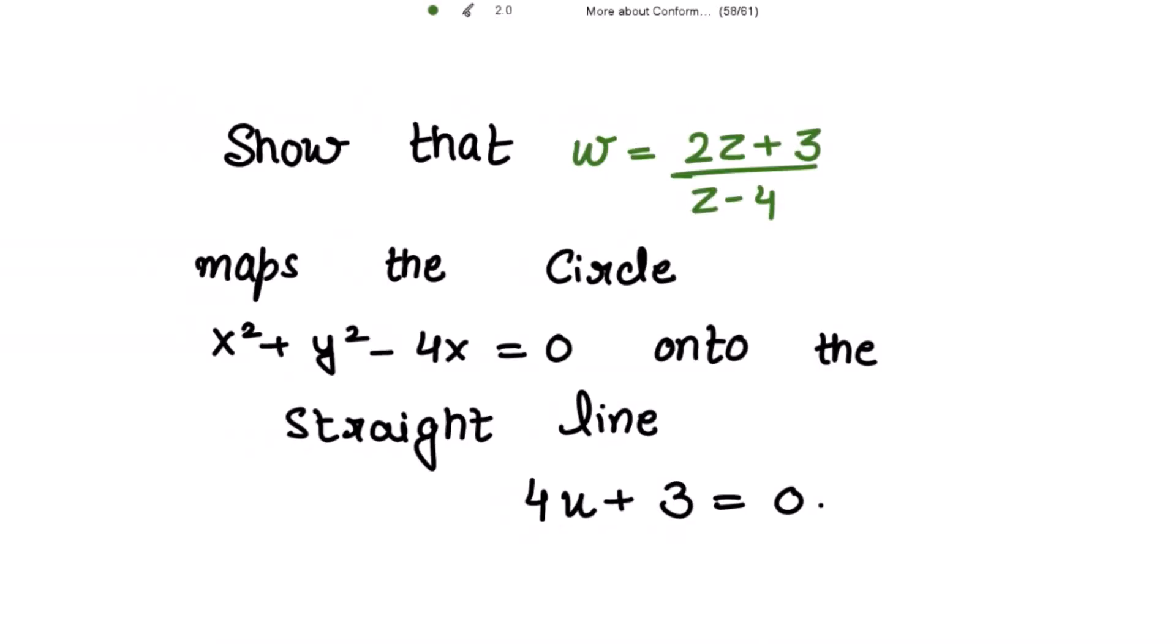Show that the transformation w equals 2z plus 3 over z minus 4 maps the circle x² plus y² minus 4x equal to 0 onto the straight line 4u plus 3 equal to 0.